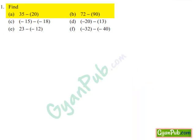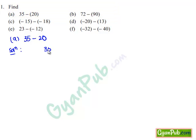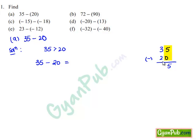Let us move on to the first question of the third exercise: find a) 35-20, b) 72-19, c) -15-(-18), d) -20-13, e) 23-(-12), and f) -32-(-40). Taking down the first part, 35-20: we observe that 35 is greater than 20, so we can apply general subtraction. Since 5 is greater than 0, we subtract directly: 5-0 is 5, 3-2 is 1, so we get 15.